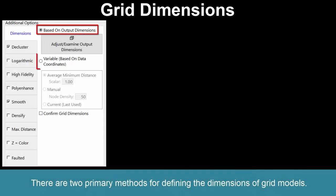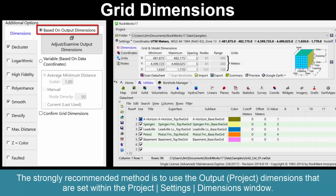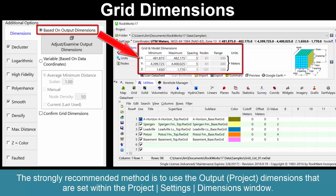There are two primary methods for defining the dimensions of grid models. The strongly recommended method is to use the output or project dimensions that are set within the Project Settings Dimensions window.